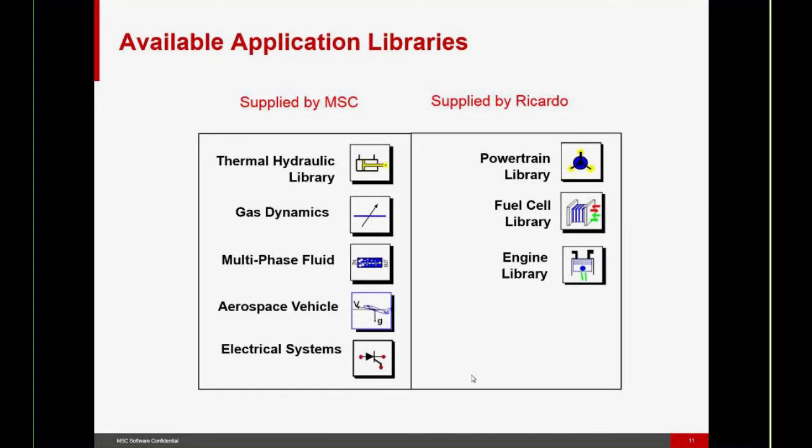EZ5 has a number of predefined application libraries, which are commercially available. Of course, I've already mentioned the general purpose library, which comes with EZ5. There are also a number of application libraries that are supplied by MSC. Some of these are separately licensed. These include the thermal hydraulics library, gas dynamics library for modeling pneumatics and environmental control systems, the multi-phase fluid library for modeling cryogenics and refrigeration cycles, the aerospace vehicle library, and the new electrical systems library, which Claude will be discussing shortly. There are also commercial third-party libraries from Ricardo: the powertrain library, the fuel cell library, and the internal combustion engine library.